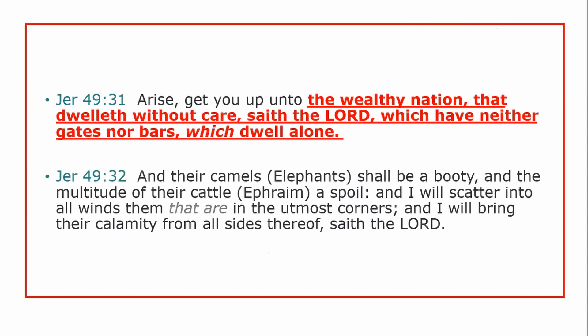The next verse says, 'And their camels' — which is the elephants, another word for elephants, a beast of burden — 'shall be booty. And the multitude of the cattle' — that really represents Ephraim, the bull. 'I will scatter them into the uttermost corners, and I will bring their calamity from all sides thereof.' So they're going to scatter to all the different nations when this war starts. The very last verse of Jeremiah 49 talks about the last days. This is talking about America.